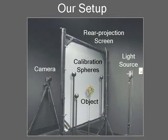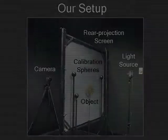The physical setup used in our experiments is shown here. The light source positions are estimated using the shadowgrams of at least two spheres.